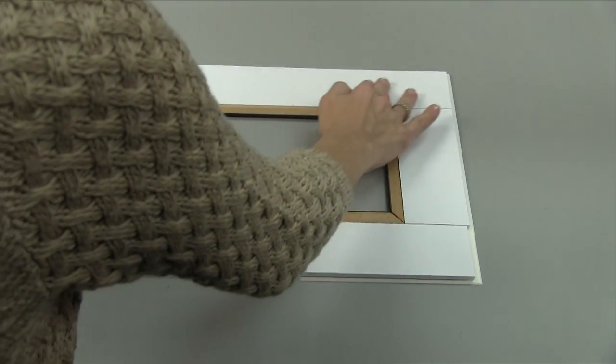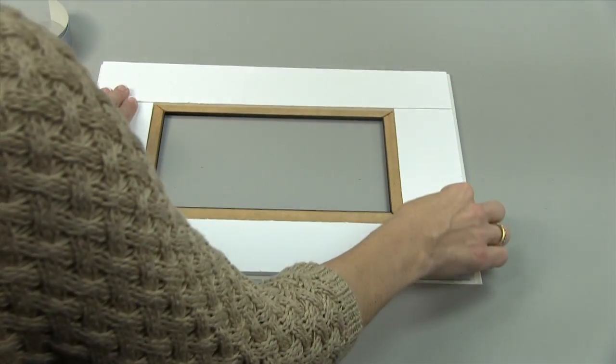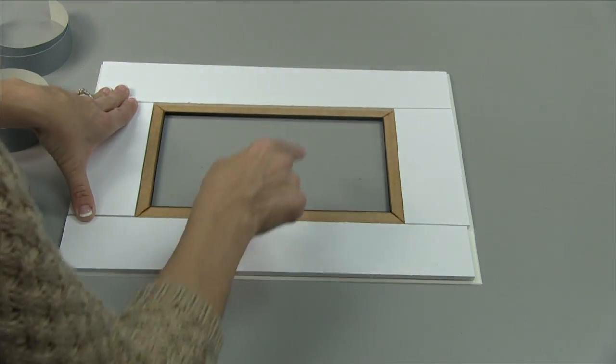For the width of the foam board strips, measure from the back edge of the fillet to the outside of the mat board.